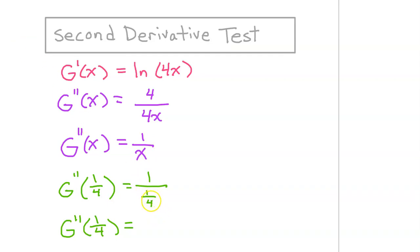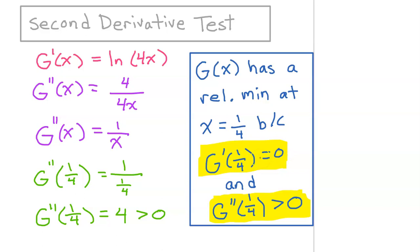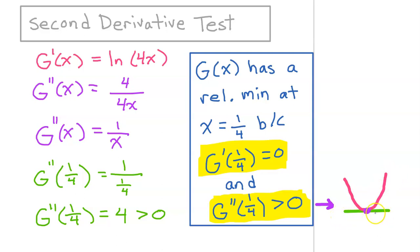When you divide by a fraction, you multiply by the reciprocal, so we get 4, which is obviously greater than zero — and that's what matters. Remember that the second derivative test always has two parts. We summarize by saying capital G of x has a relative min at x equals one-fourth because capital G prime at one-fourth equals zero and capital G double prime at one-fourth is positive. The positive second derivative indicates that G is concave up, and thus any horizontal tangent line will be at a minimum.